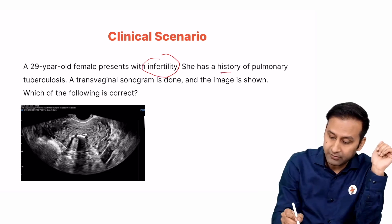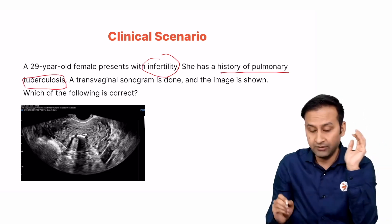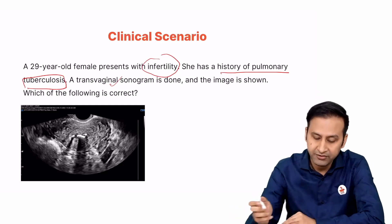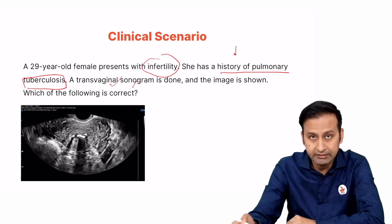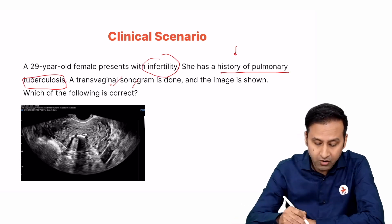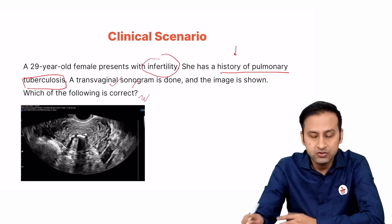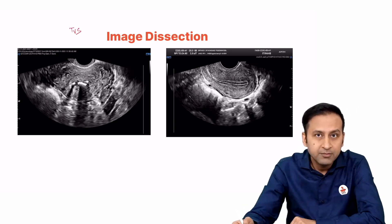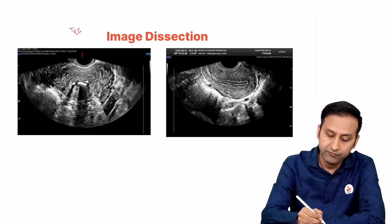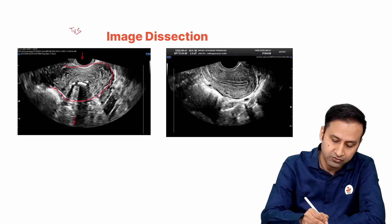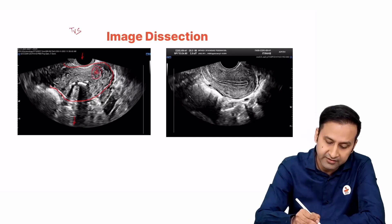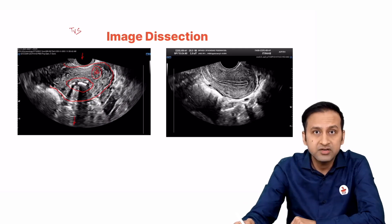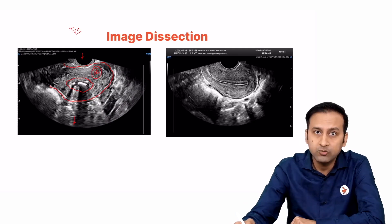She has a history of pulmonary tuberculosis — the examiner has given a very classical hint of TB. A transvaginal sonogram is done. The examiner has given you the investigation name and pertinent clinical history. Let us dissect this image using the same approach. The myometrium and uterus look almost normal and healthy, grayish or black in color. But in the endometrial cavity, we see some very bright, white structures filling the cavity.